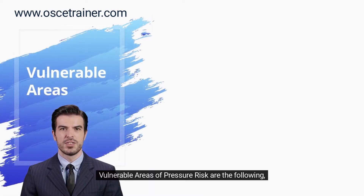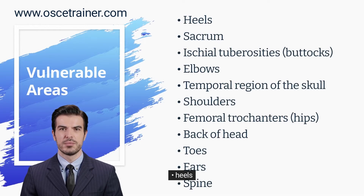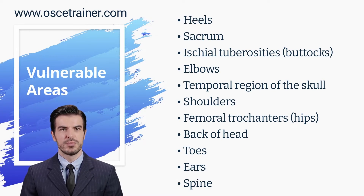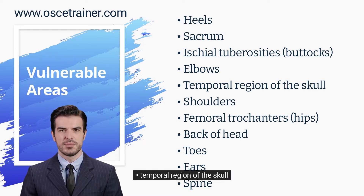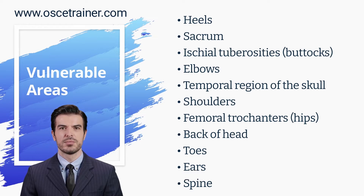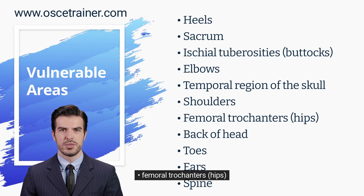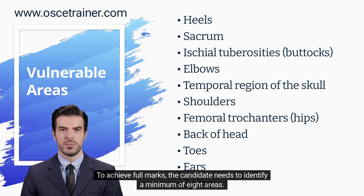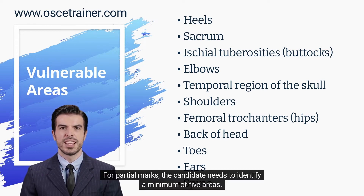Vulnerable areas of pressure risk are listed on the assessment sheet. To achieve full marks, the candidate needs to identify a minimum of 8 areas. For partial marks, the candidate needs to identify a minimum of 5 areas.